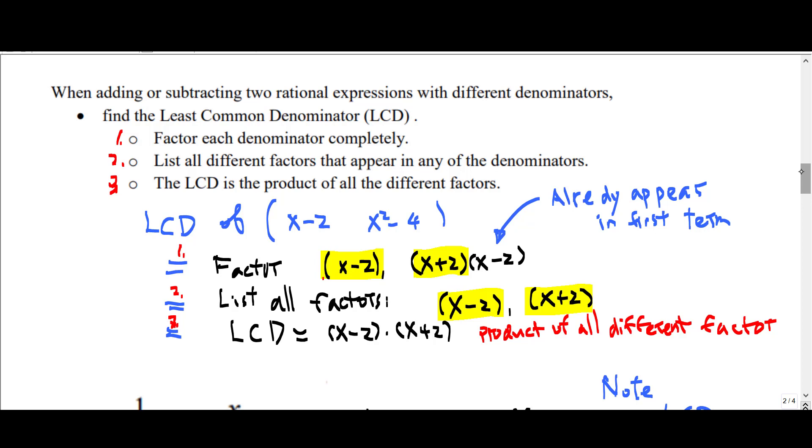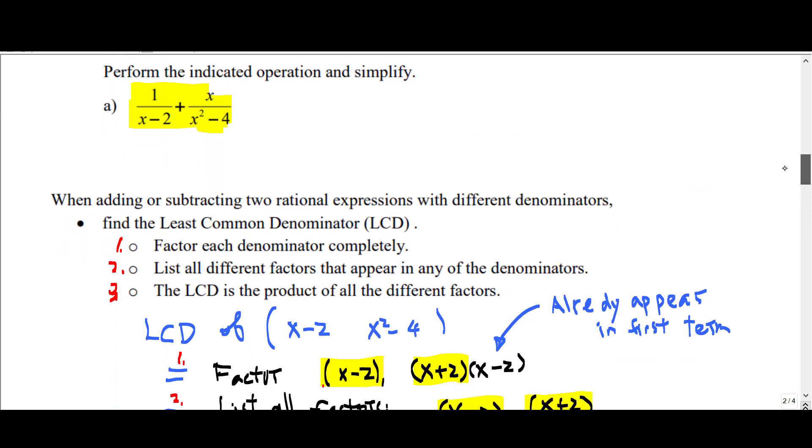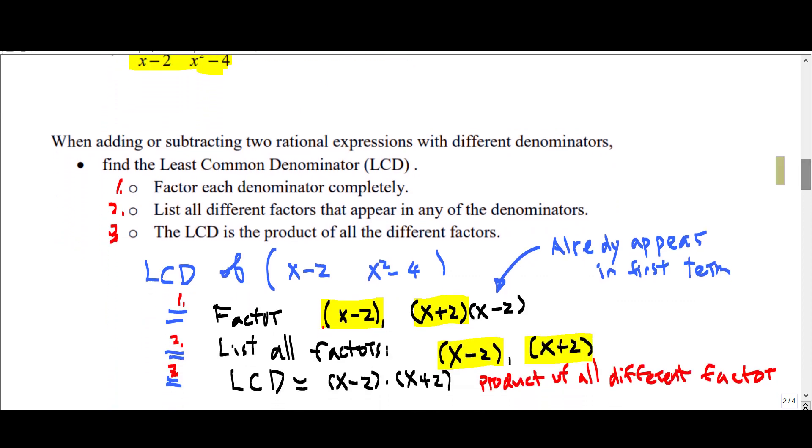You need to factor each denominator completely. So we have the denominator x minus 2, and x square minus 4. When completely factored, this becomes x minus 2, and x plus 2 times x minus 2 for step 1.